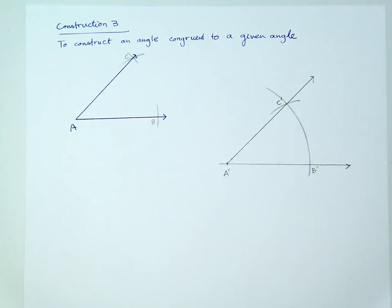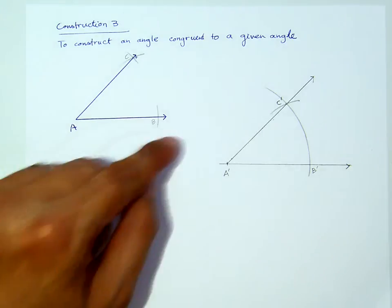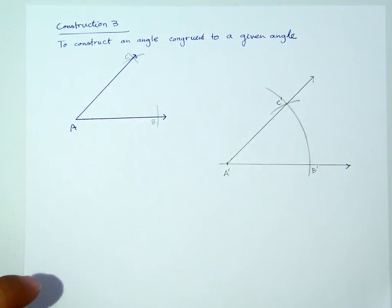Now, this is Construction 3. Before I repeat this in another situation, I want you to be aware that this construction is also a way for us to copy a triangle. So if I give you a triangle ABC, for example, what you will do first, you draw a line.